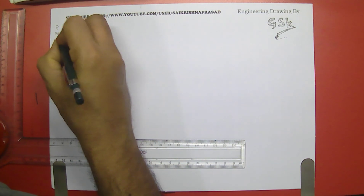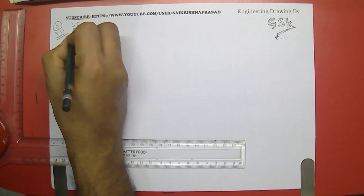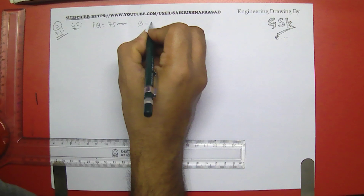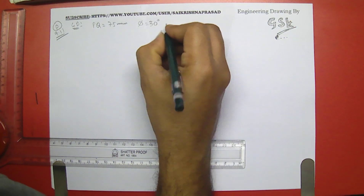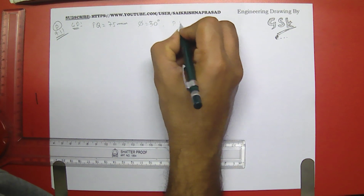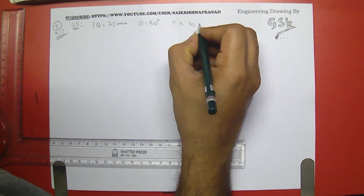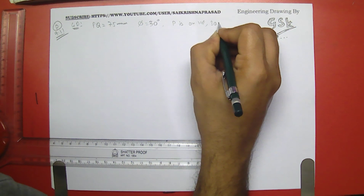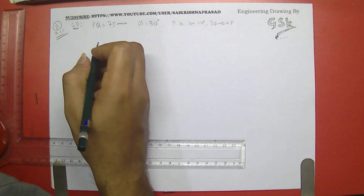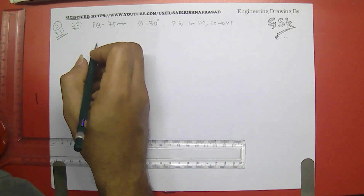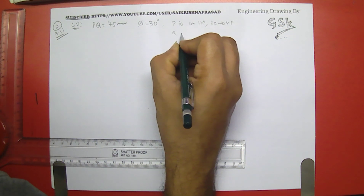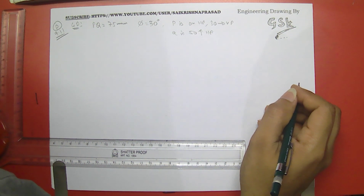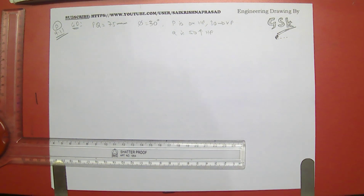Let me write out the given data for problem 9.11. The line PQ is 75mm, φ is 30 degrees. P is on the HP and 30mm in front of the VP. Q is 50mm above the HP. The distance of Q from the VP is not given, so we need to determine it.